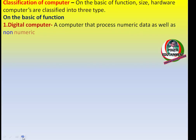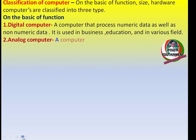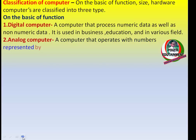The first type is digital computer. A computer that processes numeric data as well as non-numeric data is said to be a digital computer. It is used in business, education, and in various fields. Now we'll talk about analog computer.